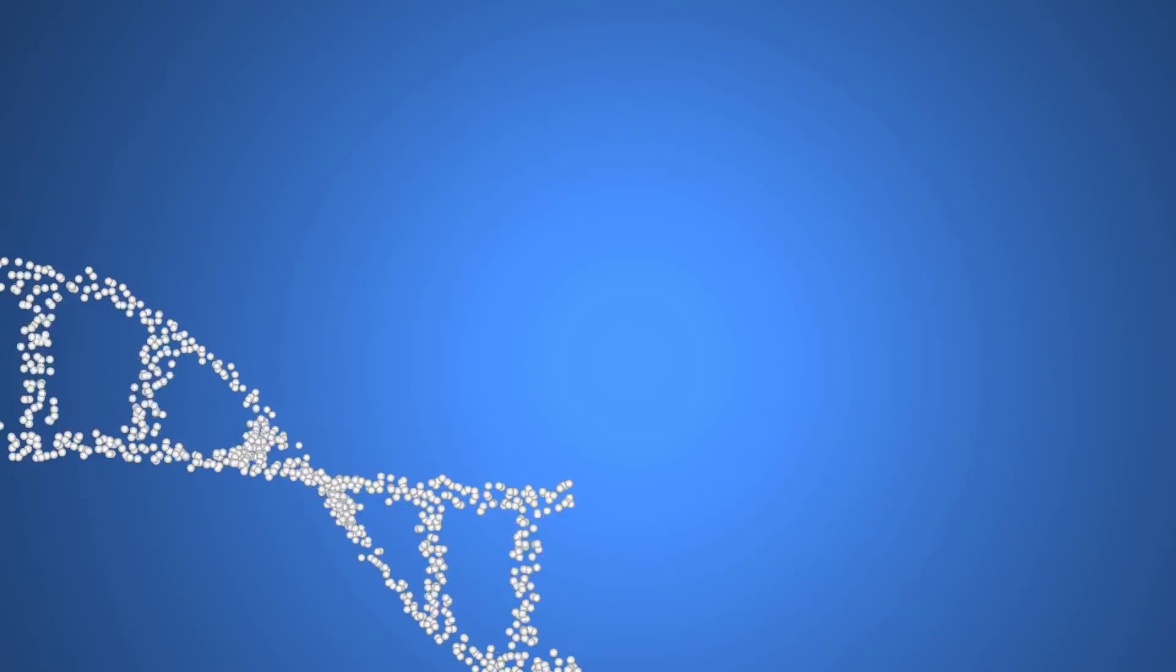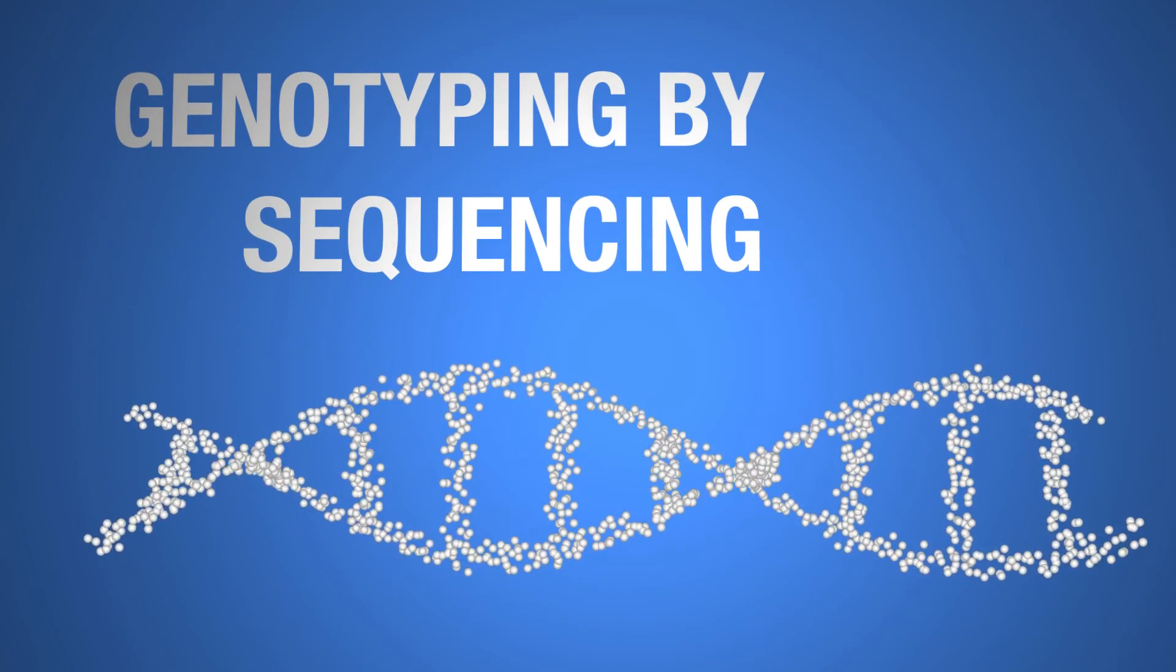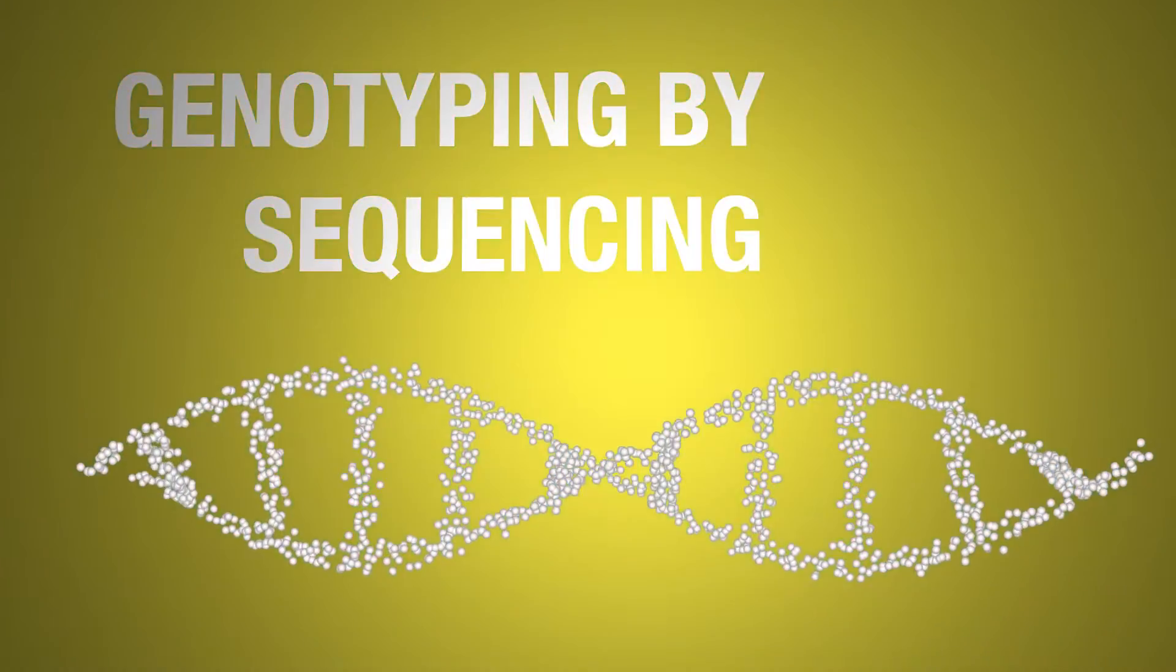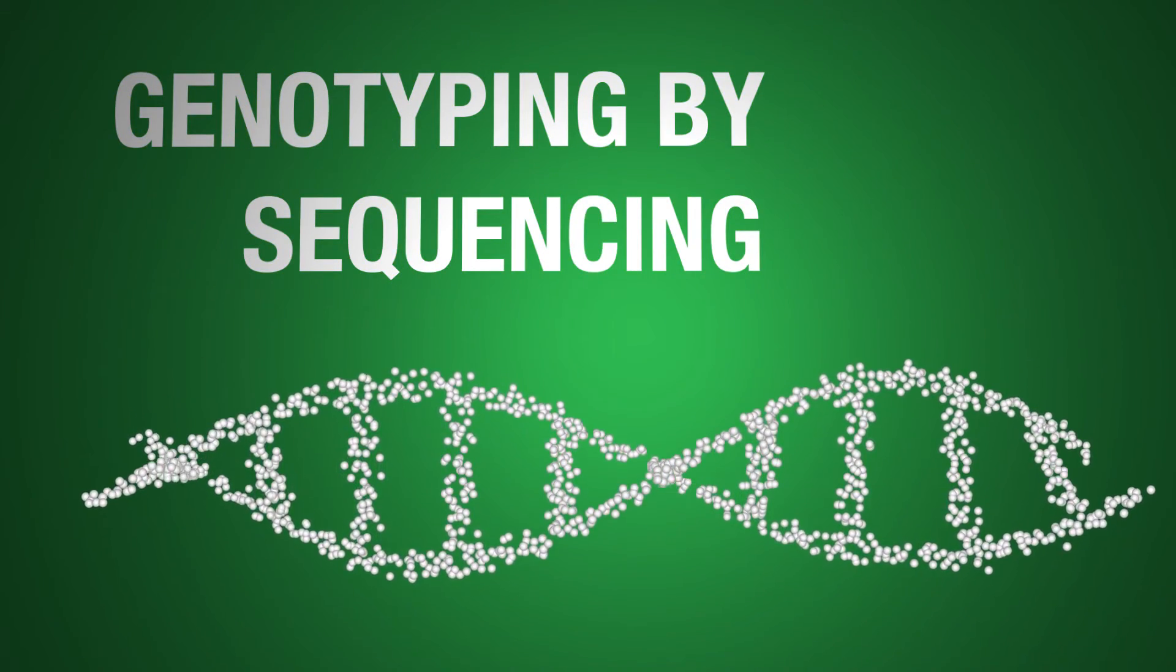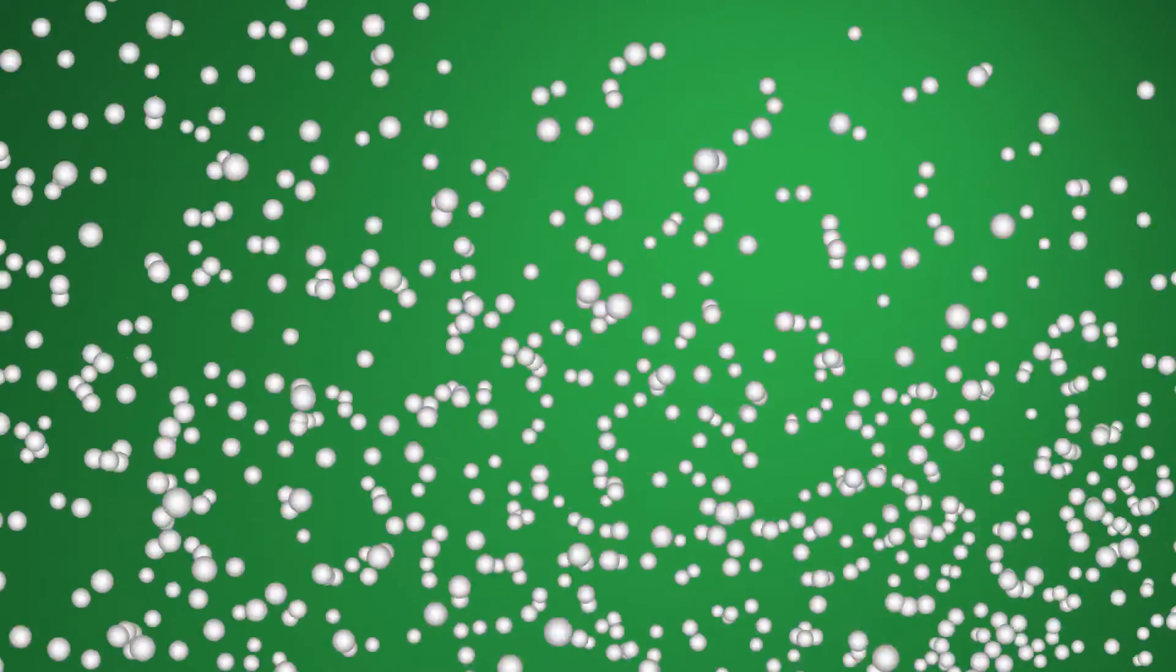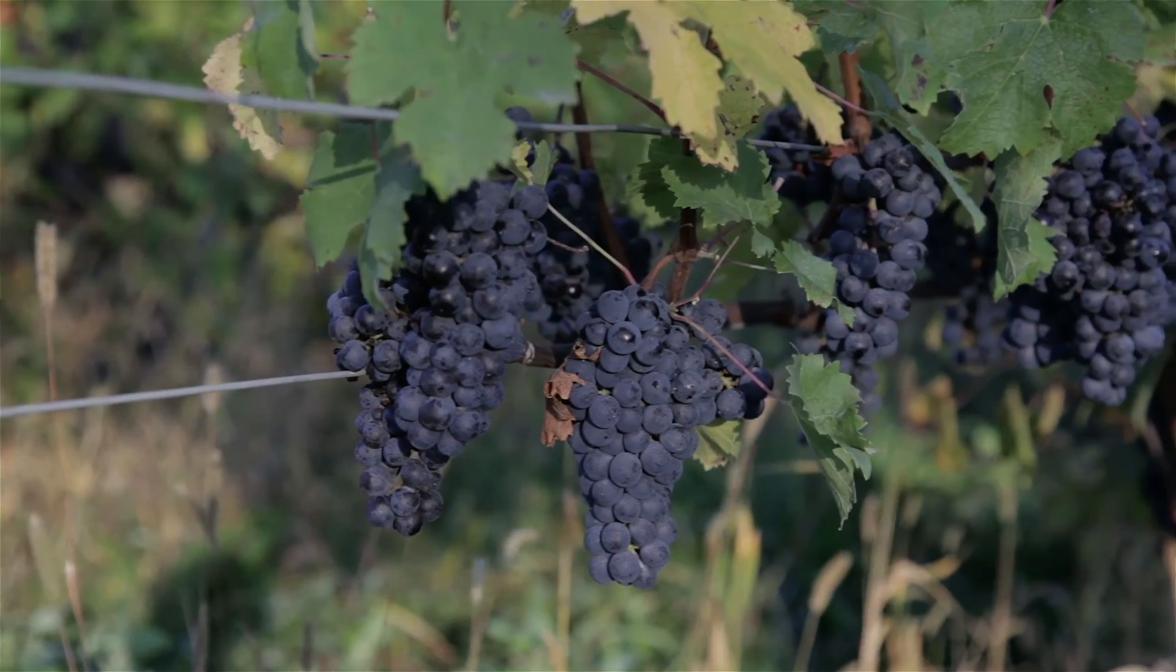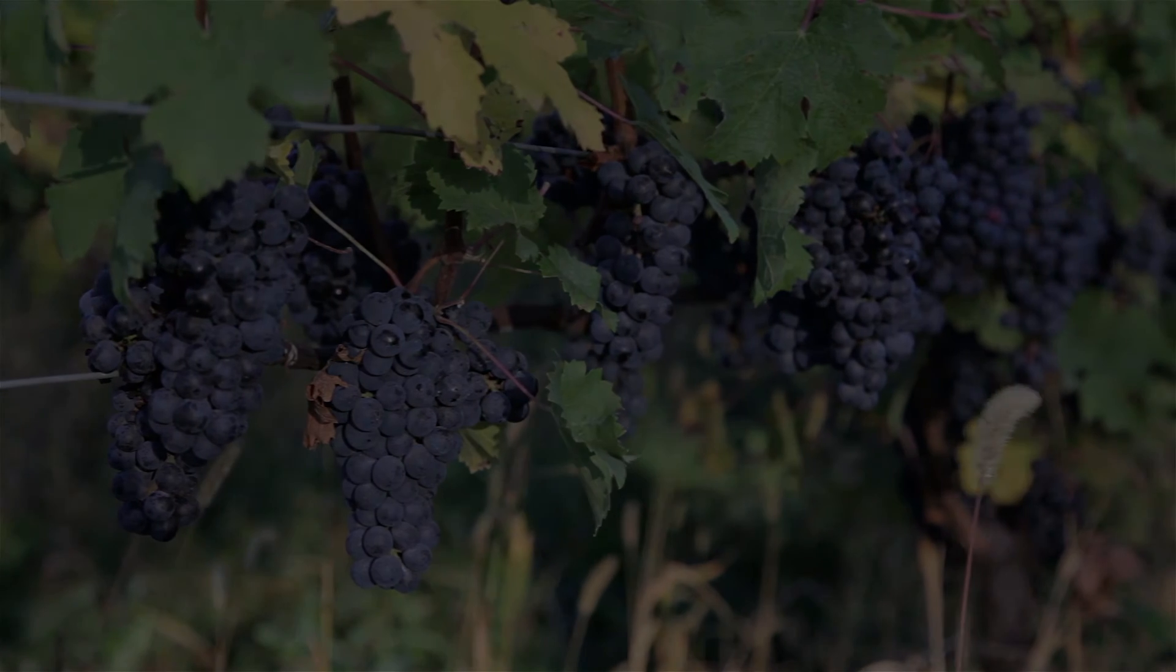We've developed in VitisGen a technology called genotyping by sequencing. It was first developed in maize and we've adapted it to grapevine. Genotyping by sequencing is a high-resolution marker system where we look at about 50,000 points in a genome, and we identify which of those 50,000 points is associated with powdery mildew resistance. So that when a grape breeder grows out the next generation of a family, they can know right away whether the vine has the markers associated with resistance or not.